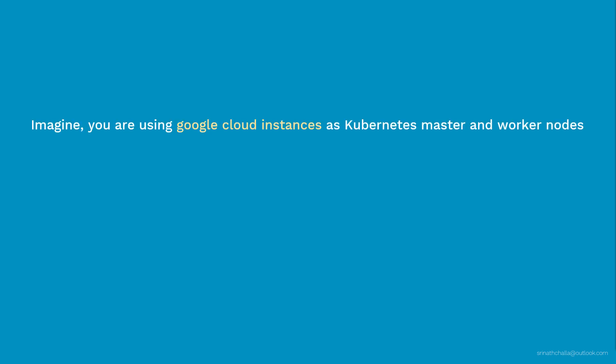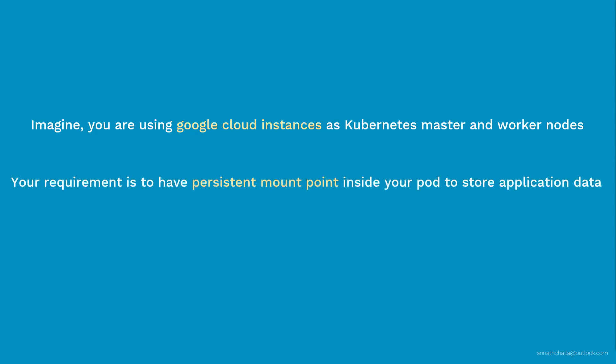Imagine you are deploying your containerized app inside your Kubernetes cluster and using Google Cloud instances as Kubernetes master and worker nodes. Your requirement is to have a persistent mount point inside your pod to store your application data. We have seen a few volume types such as emptyDir and hostPath previously, but they are not suitable for this kind of use case — so they are out of the picture. What is your next available option?